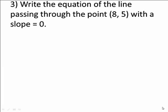Okay, now let's see if we can write the equation of the line passing through the point (8, 5) with a slope of 0. So in this case, we really don't have to use the point-slope formula because we know that any line with a slope of 0 is a horizontal line.